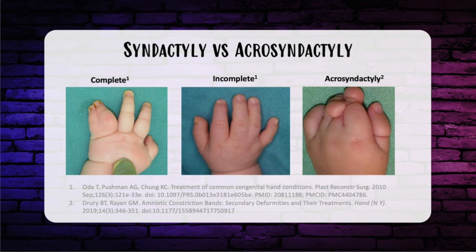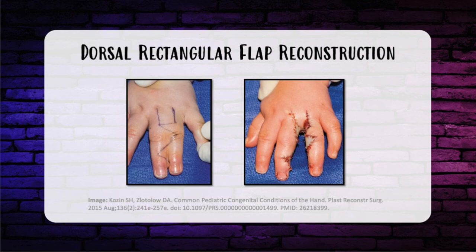X-ray imaging is important to evaluate for bony involvement. If more than one digit is involved, only separate one side of the digit at a time because of uncertainty of vascular supply. Release border digits first — thumb and small finger. An exam favorite: the proximal limit of digit separation in syndactyly is at the bifurcation of the digital artery. The most common reconstruction for the web space uses proximally based dorsal rectangular flaps. Complete syndactyly may need full thickness skin grafting in addition to local flaps and Z-plasties. Avoid straight line incisions in the web space, which can cause creep and contracture.